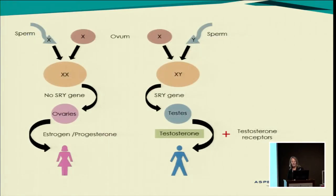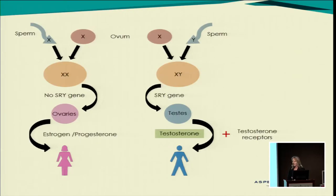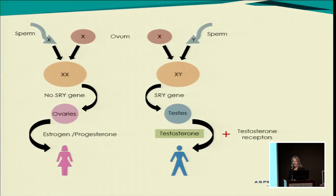So essentially, when you have a zygote, it's either XX or XY. If it is XY, that means there's an SRY gene, and the SRY gene will cause the development of testes. It's the development of testes that then causes the secretion of testosterone. Obviously this is a very simple way of putting it because testosterone is secreted in other ways too, and also in women, but this is the most important one. And in the presence of testosterone receptors, the secondary characteristics of a man develop.